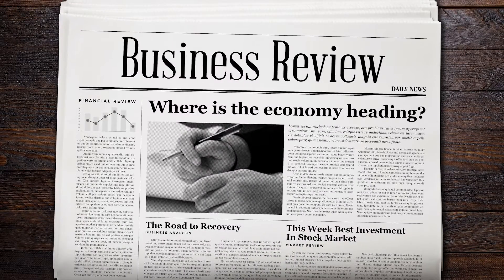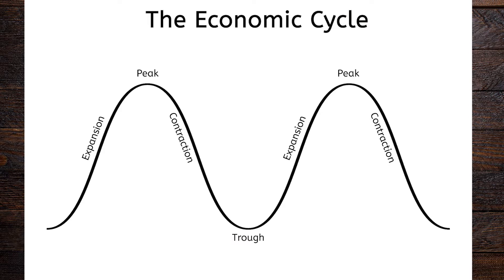An economic cycle has four parts. Expansion is a period of growth. The peak is the highest point of an economic cycle. That's followed by contraction, which is a period when an economy is experiencing a decline in economic activity. And finally, there is a trough — the lowest point of economic activity in a cycle. From there, the process repeats.